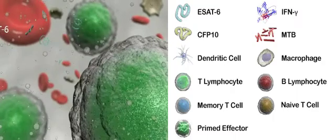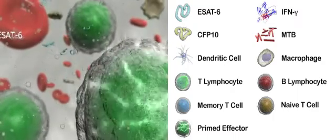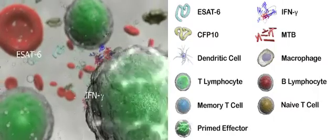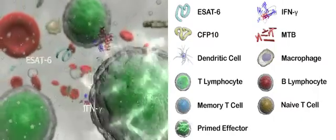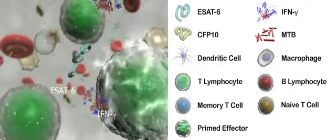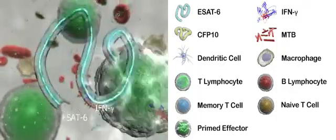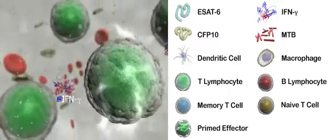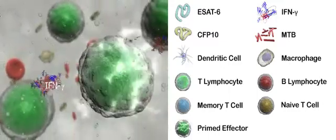The T-Spot TB assay only detects interferon gamma released from MTB-specific active prime effector cells, since PBMC white cells are only incubated with antigen for 16 hours. Interferon gamma release from responses by memory cells and naive T cells are therefore not detected.